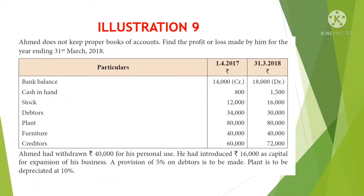Agamad had withdrawn Rs 40,000 for his personal use. He had introduced 16,000 as capital for expansion of his business. A provision of 5% on debtors is to be made. Plant is to be depreciated at 10%.